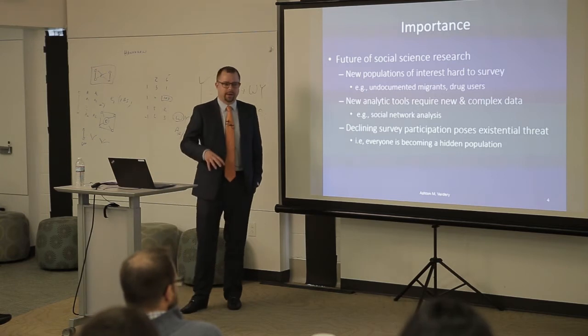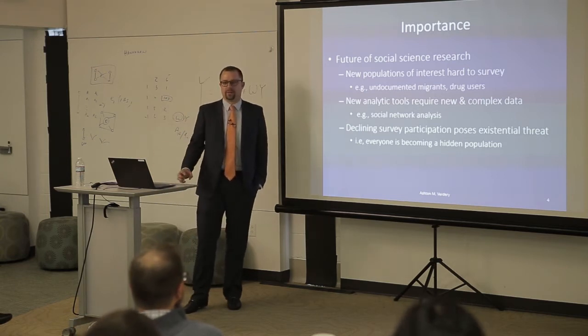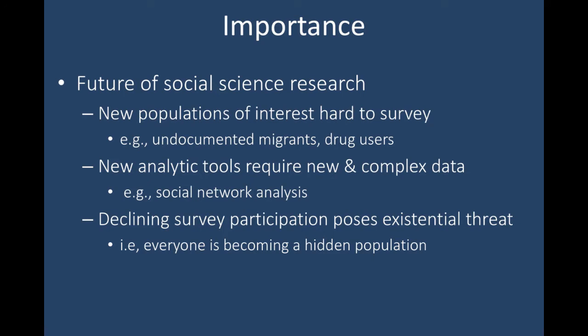I like to start talking about RDS in a broader sense of what I view as the importance of it. I really think that at least some element of it is the kernel of the future of social science research. As we have moved beyond just looking at nationally representative data, there's a lot of interest in looking at populations that are very difficult to sample — homeless individuals, people who are drug users and things like that. RDS provides us with pretty much the most effective way of actually collecting data on those populations.